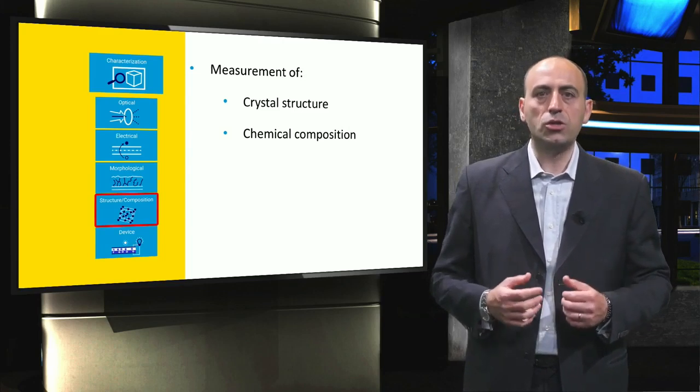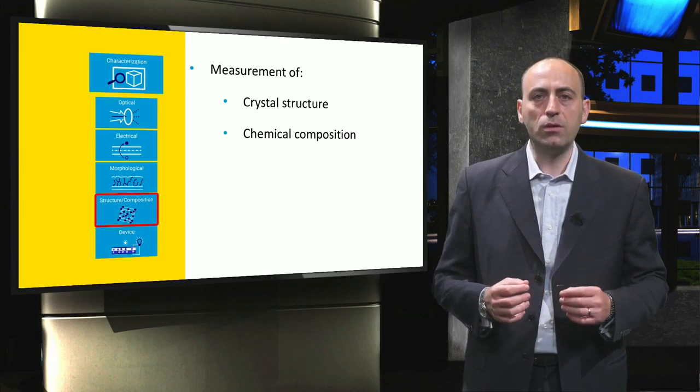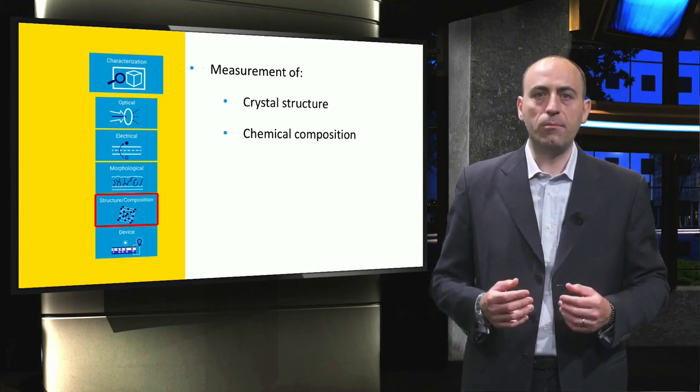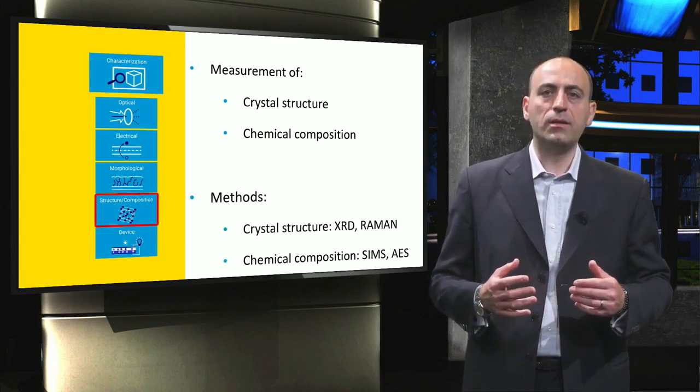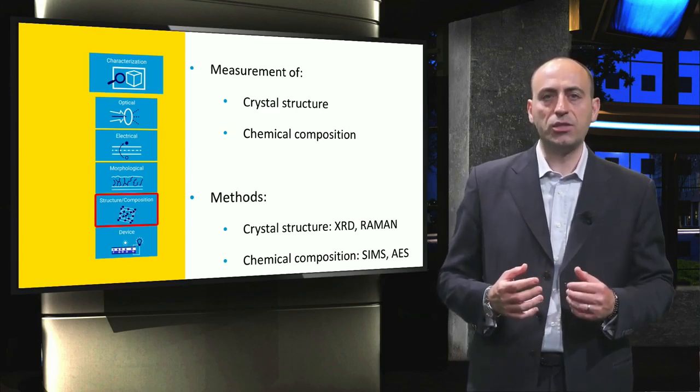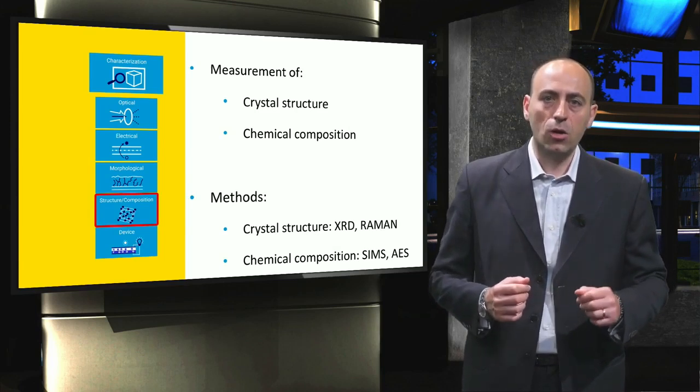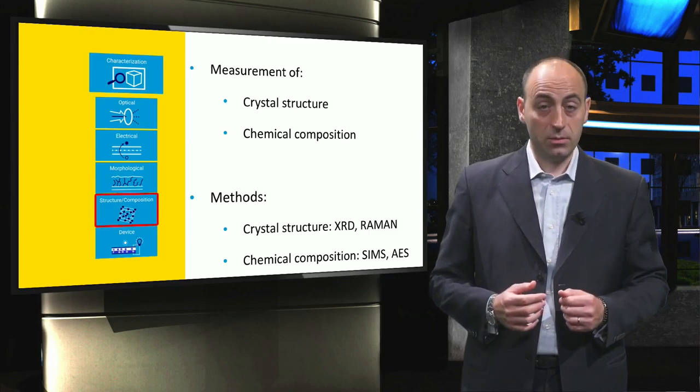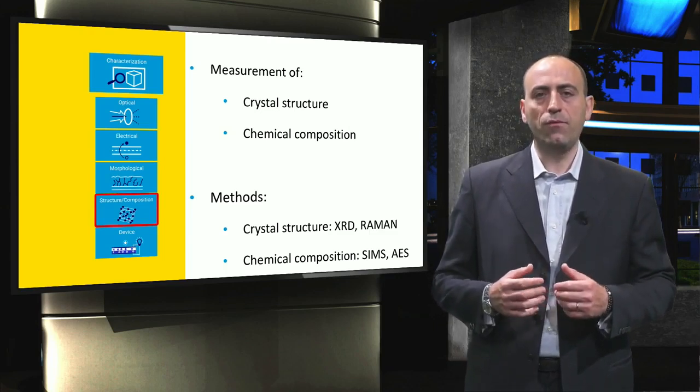In addition, the knowledge of a material crystal structure and the chemical composition is important for the modeling of some optical and electrical properties, for example in the case of ellipsometry measurements. To determine the crystal structure of layers, methods like X-ray diffraction and the Raman spectroscopy are commonly used. For the chemical composition, we will focus on the secondary ion mass spectroscopy and the Auger electron spectroscopy.